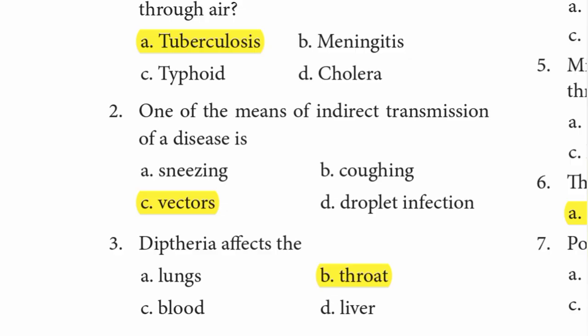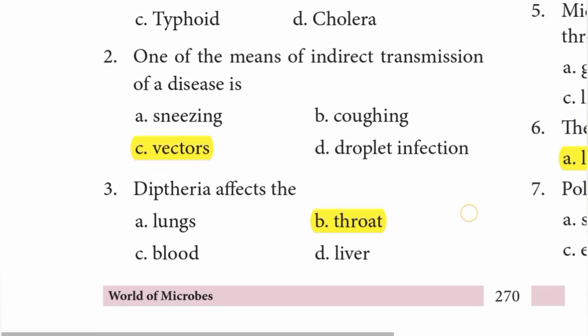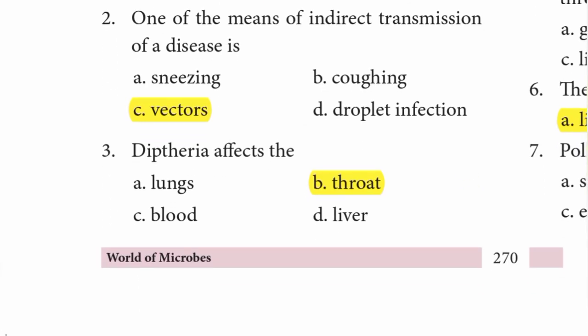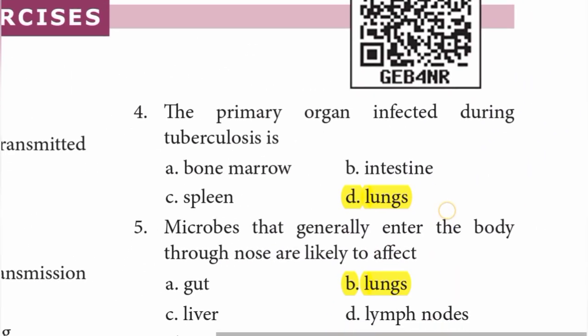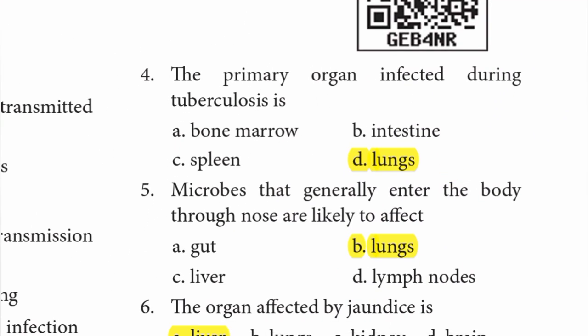Second one — one of the means of indirect transmission of a disease is: sneezing, coughing, vectors, or droplet infection? The correct answer is option C: Vectors. Third one — diphtheria affects the lungs, blood, throat, or liver? Diphtheria affects the throat, so option B is the right answer.